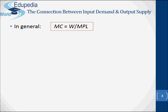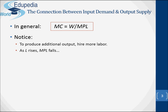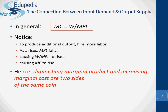Let's see the connection between input demand and output supply. Notice that to produce additional output, we must hire more labour. As L rises, MPL falls, causing W divided by MPL to rise, causing the marginal cost to rise. Hence, diminishing marginal product and increasing marginal cost are two sides of the same coin.